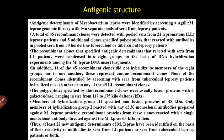Antigenic structure: antigenic determinants of Mycobacterium leprae were identified by screening two separate pools. A total of 45 recombinant clones were detected with pooled sera from 21 lepromatous leprosy patients, and five additional clones specified polypeptides that reacted with antibodies in pooled sera. The recombinant clones specifying antigenic determinants reacted with sera from lepromatous leprosy patients were condensed into eight groups on the basis of DNA hybridization.